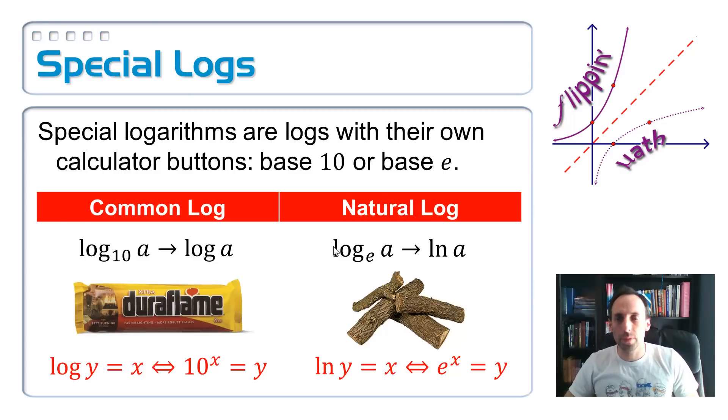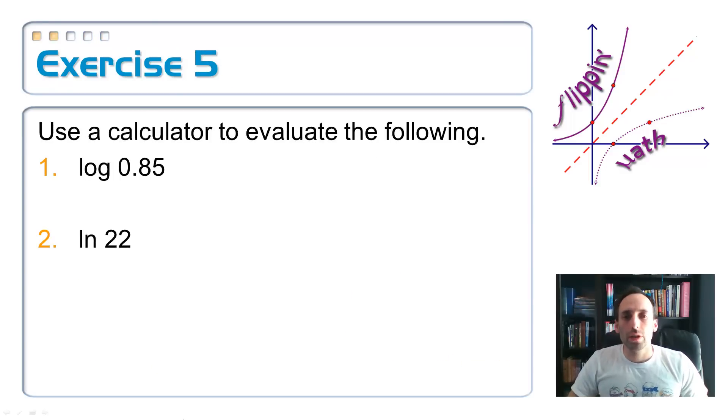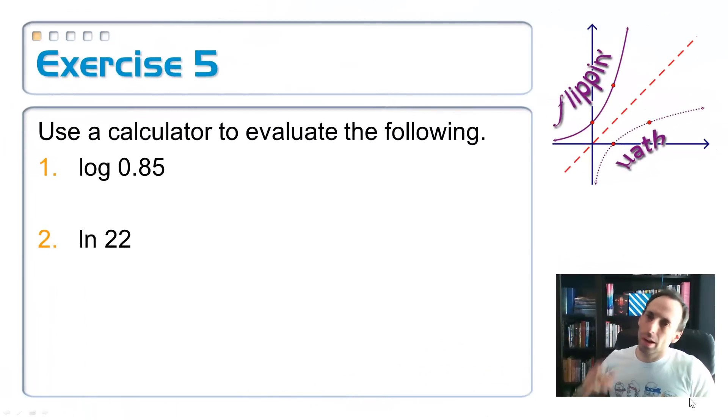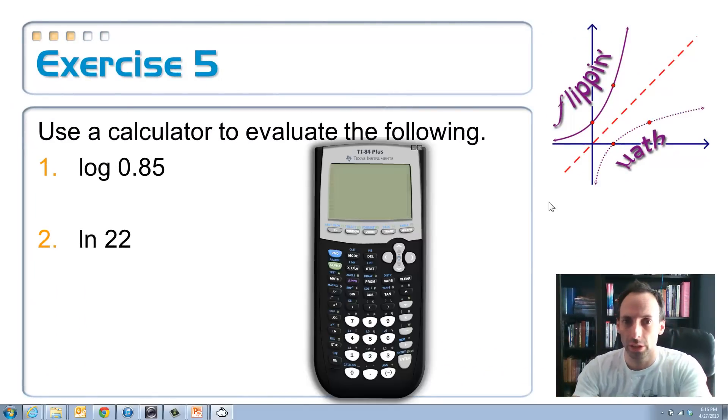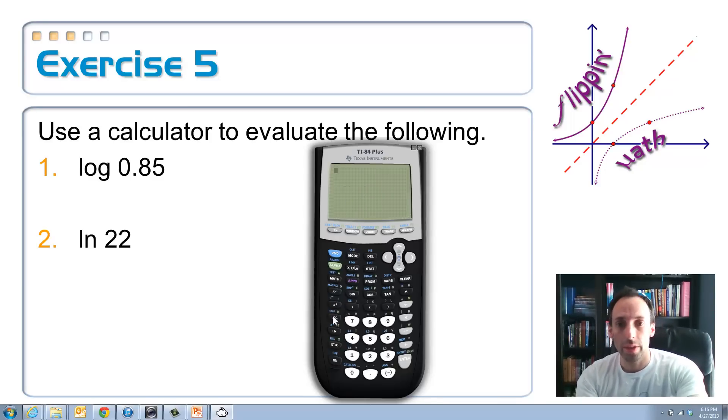So let's use our calculator to evaluate these two. So first, I have to turn on my calculator because I forgot. All right, I got the calculator. So here we go. Here's the calculator. And first of all, your two log keys on your calculator. You've got the common log, which is base 10, and that's just the log key. And then finally, you have the natural logarithm, which is right below it, in capital letters ln.